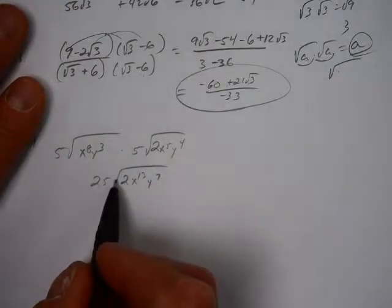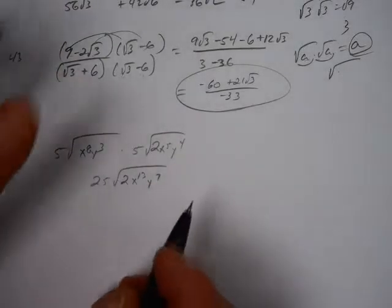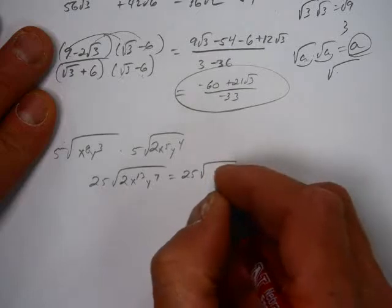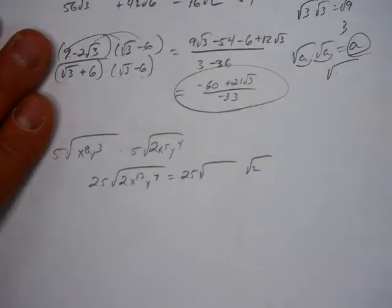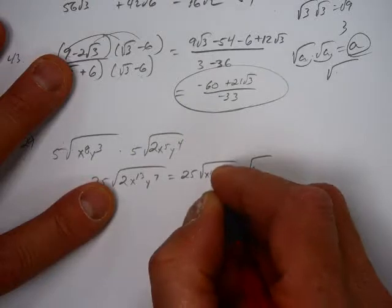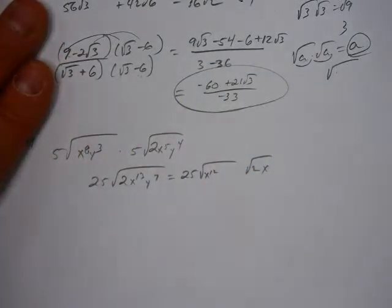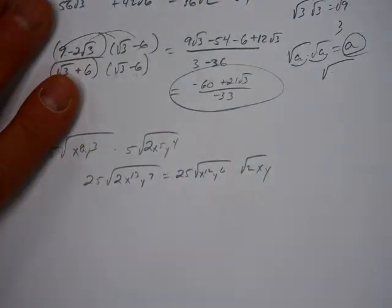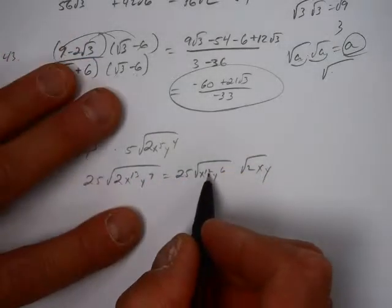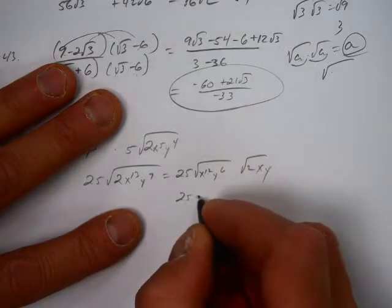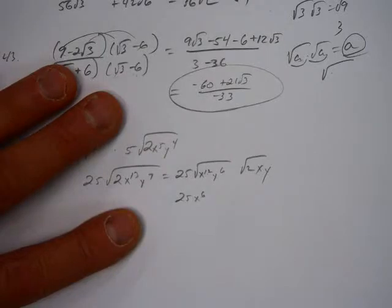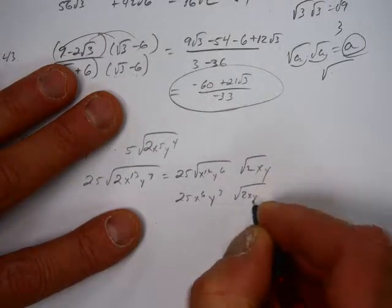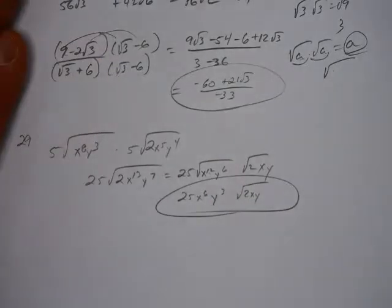So what we'll do is we can take a look at, remember, square roots we're looking for pairs. So what we have then is we get 25. And I'm just going to break it up into things I know. I don't know a square root of 2, but x to the 12th I know, but I've got an x left over. Y to the 6th I know, and I've got a y left over. So now we can just go, I'm going to break this 12 up into an x to the 6th, an x to the 6th, and y to the 6th I'll go y to the 3rd, and I'm left over with 2x.